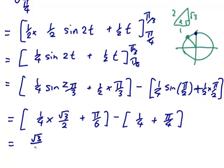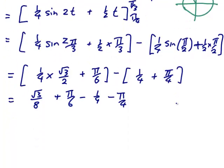I've got √3/8 + π/6 - 1/4 - π/4. And that really can't be simplified. The π/6 - π/4 could.